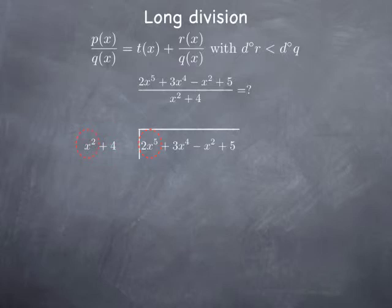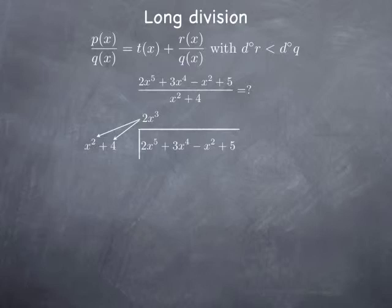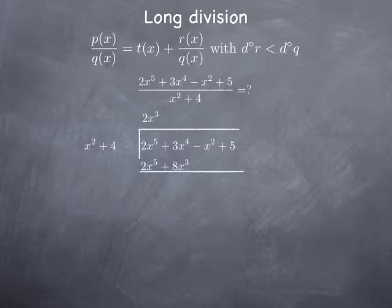We start by looking at the term of highest degree in the top, that's 2x to the fifth, and divide it by the term of highest degree in the bottom, x squared. We get 2x cubed. Then we multiply 2x cubed by the whole divisor, x squared plus 4, obtaining 2x to the fifth plus 8x cubed. We subtract this from the original polynomial: the x to the fifth terms cancel, 3x to the fourth remains, 0 minus 8x cubed gives negative 8x cubed, negative x squared remains, and 5 remains.